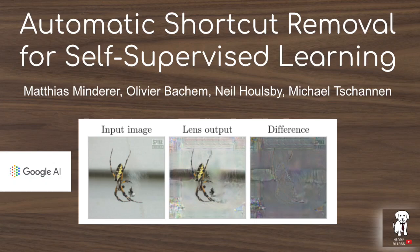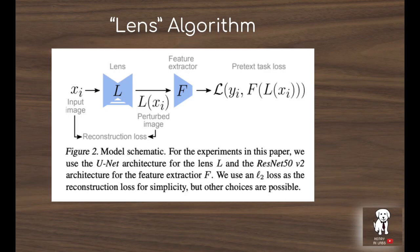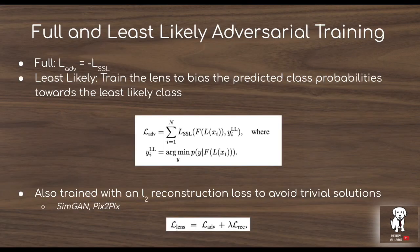Self-supervised learning is currently one of the most interesting ideas in deep learning and artificial intelligence. The idea behind self-supervised learning is to take unlabeled data and artificially constructed tasks such as rotating it and predicting the rotation angle to learn representations for images. This is obviously really interesting because unlabeled data is much easier to get than labeled data.